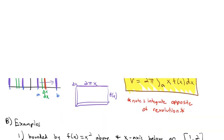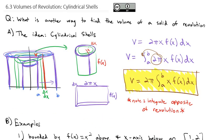To summarize finding volumes by cylindrical shells: the general formula is 2π times the integral of x · f(x) dx, where x represents the radius and f(x) represents the height. We may need to adjust the radius if rotating around a different line, and adjust the height function if working between two curves. Take a look at the homework assignment, practice several of these, and we'll discuss them more in class.